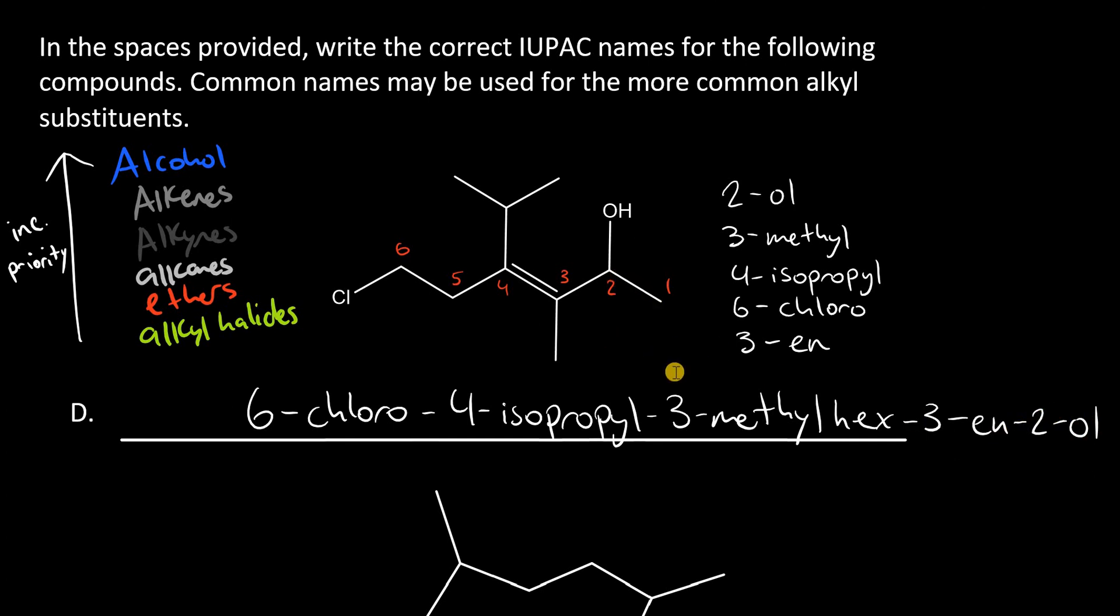So, finally, after all that work, we still need to assign E/Z isomerism. So, let's analyze carbon 4 first. We have a carbon bound to a carbon, bound to a carbon, bound to a hydrogen. Here, I have a carbon bound to a carbon, bound to another carbon, bound to a chlorine. Now, we need to be really careful and make sure we look at the first point of difference only. So, at carbon 4, I have a tertiary carbon because it's bound to three other carbons.